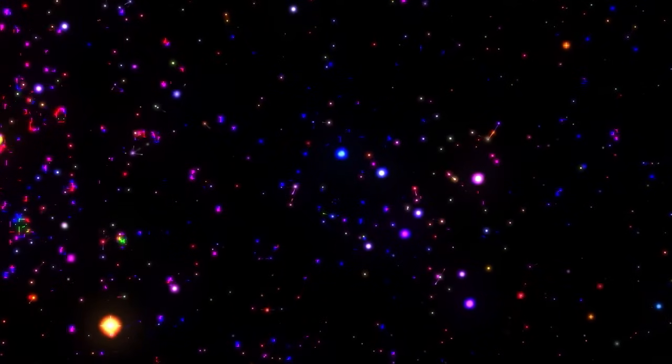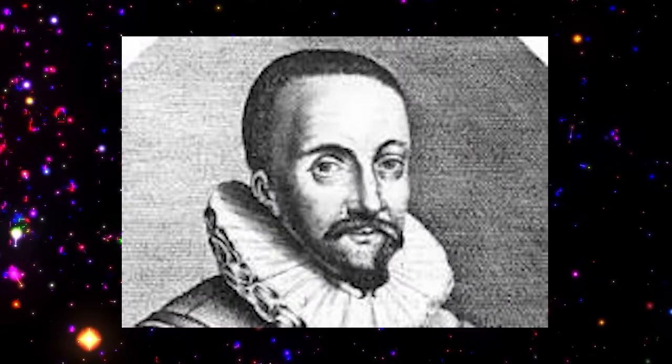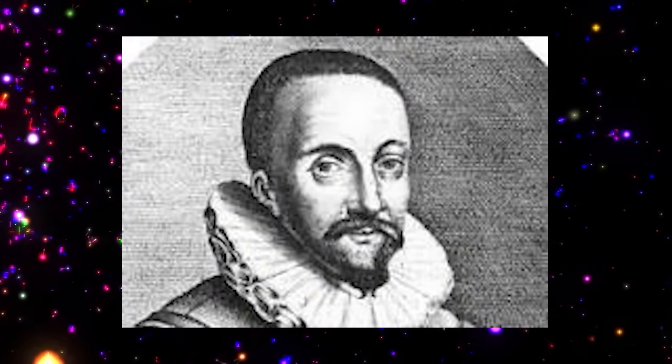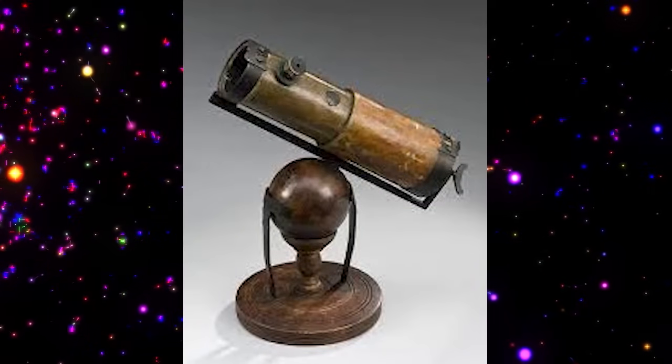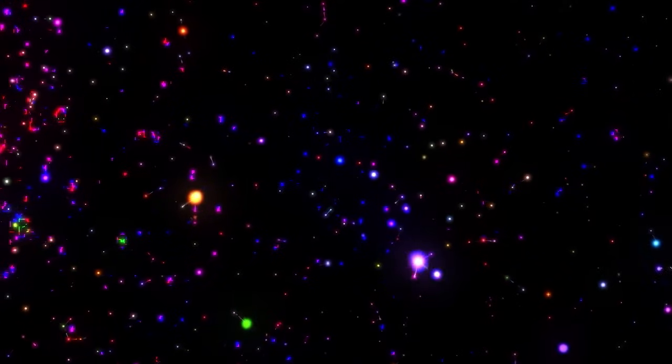The first telescope ever invented was created by a Dutch lens maker named Hans Lippershey in the early 1600s. It was a refracting telescope with a convex objective lens and a concave eyepiece. Lippershey's invention was quickly followed by Galileo Galilei's adoption and improvement of the telescope, which allowed him to make groundbreaking astronomical discoveries.